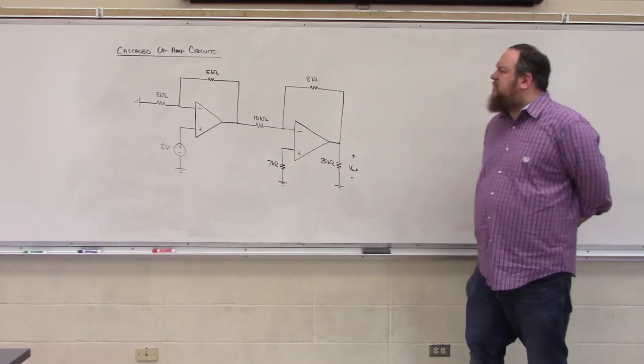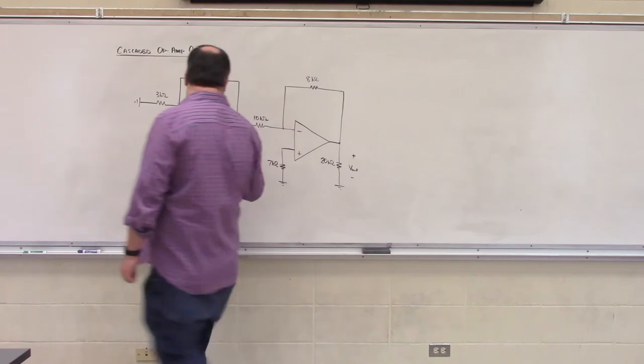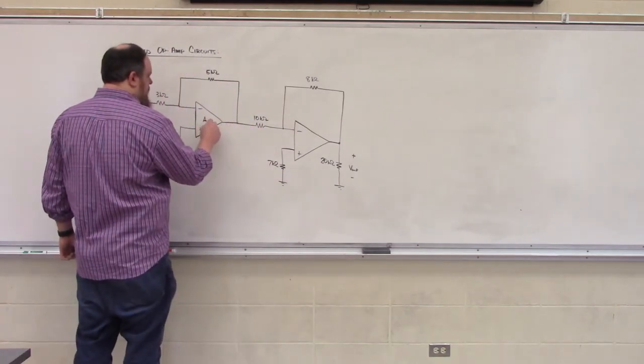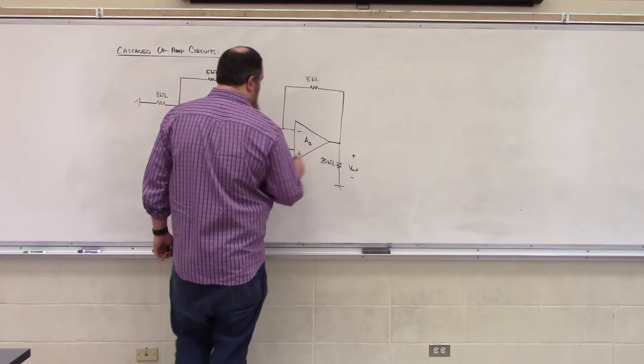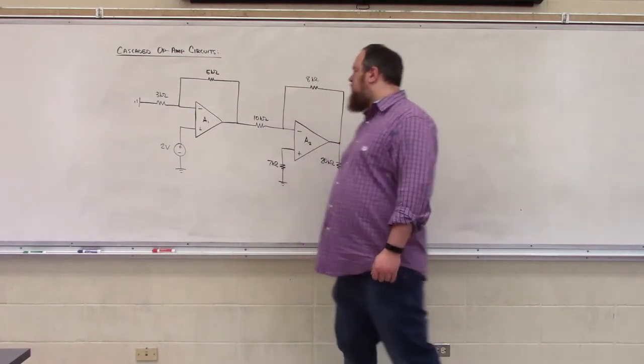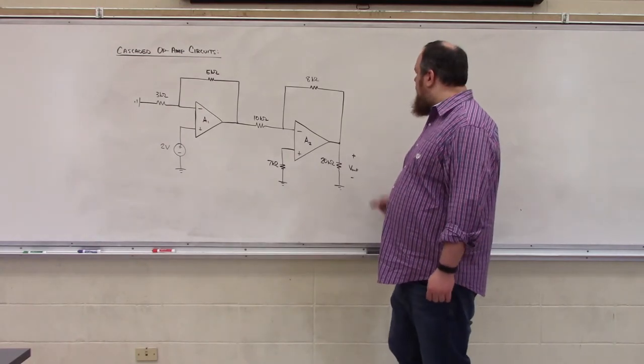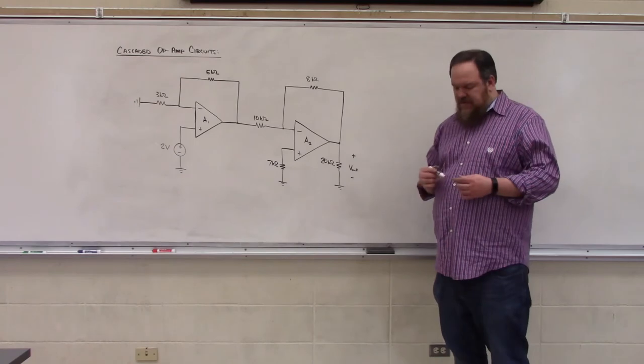So let's consider the circuit that we have here, where we have this amplifier, which I'm going to call A1, chained to this amplifier A2. We've applied an input signal of 2 volts to amplifier A1, and we're trying to measure the output voltage at the output pin of amplifier A2.